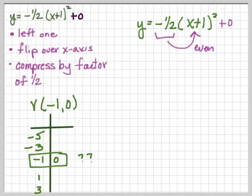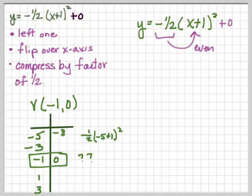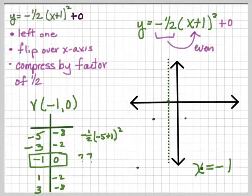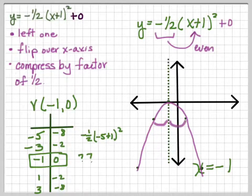They all have the same spacing. For example, plugging in x = -5: (-5 + 1) = -4, (-4)² = 16, and 16 × (-½) = -8. The arithmetic for the other points I'll leave to you. Our graph has vertex at (-1, 0), axis of symmetry at x = -1. Notice the five points are symmetric about the axis of symmetry, and the graph is wider because we've compressed it.